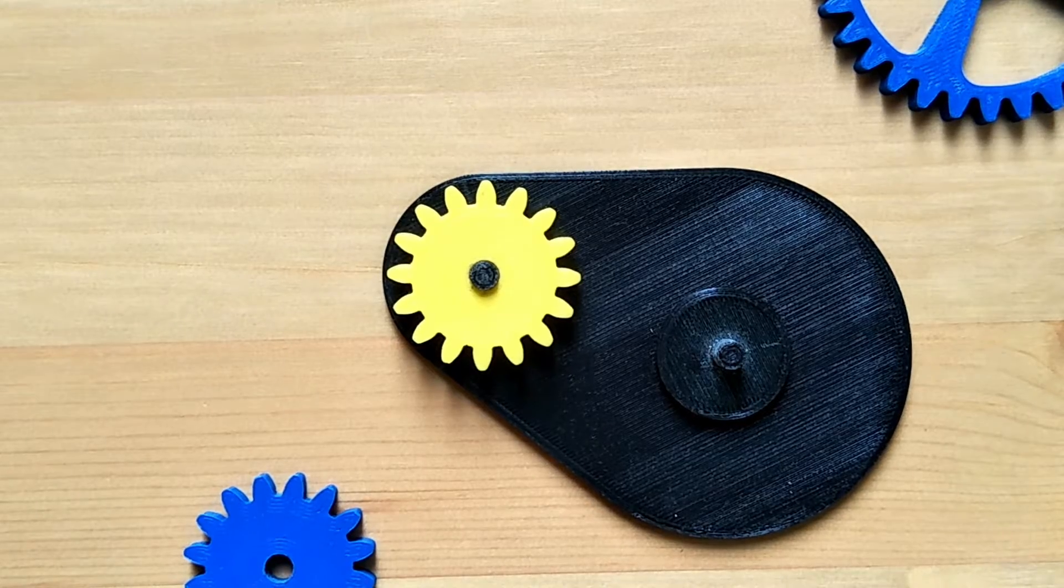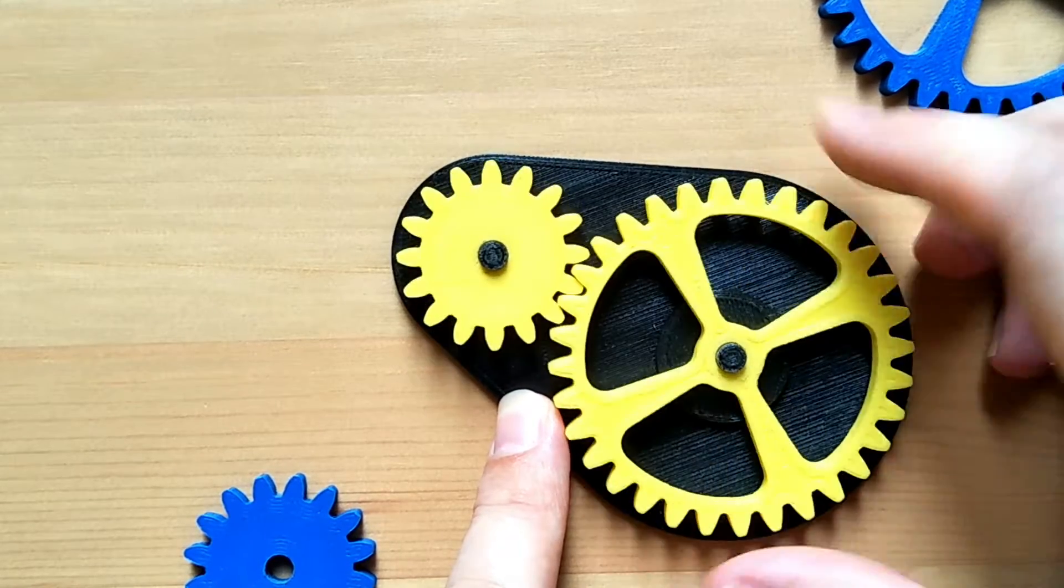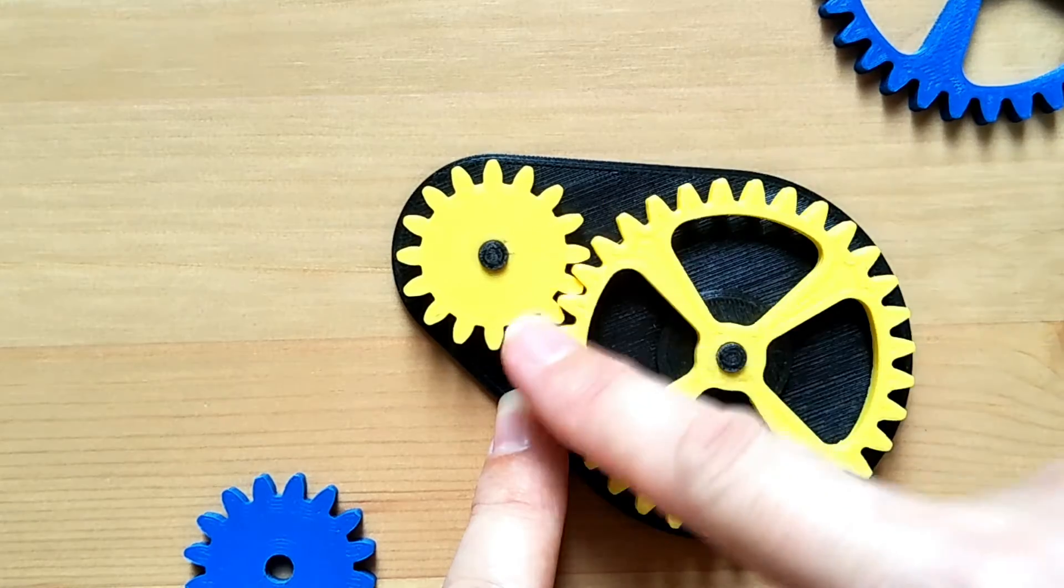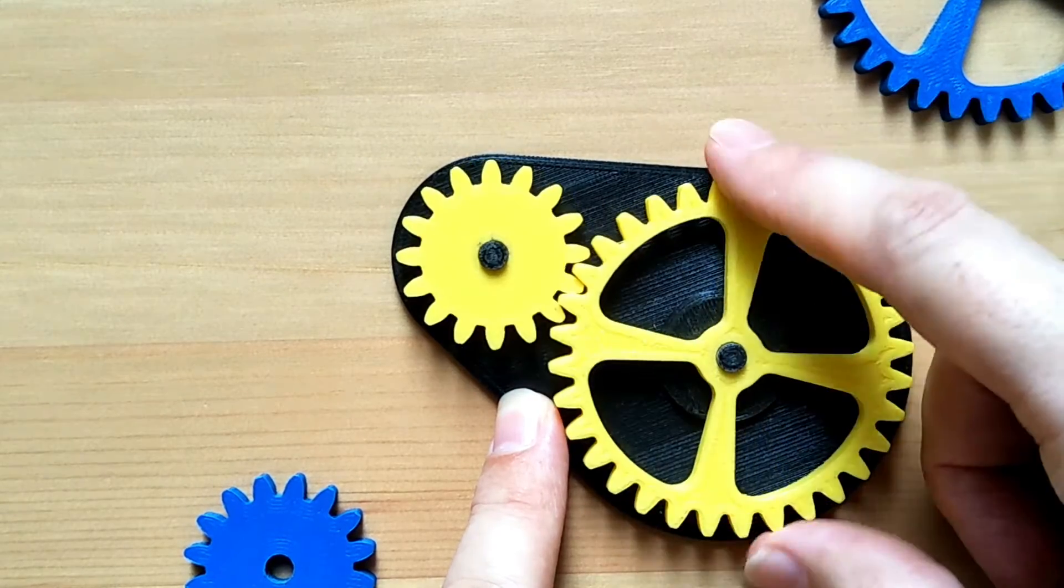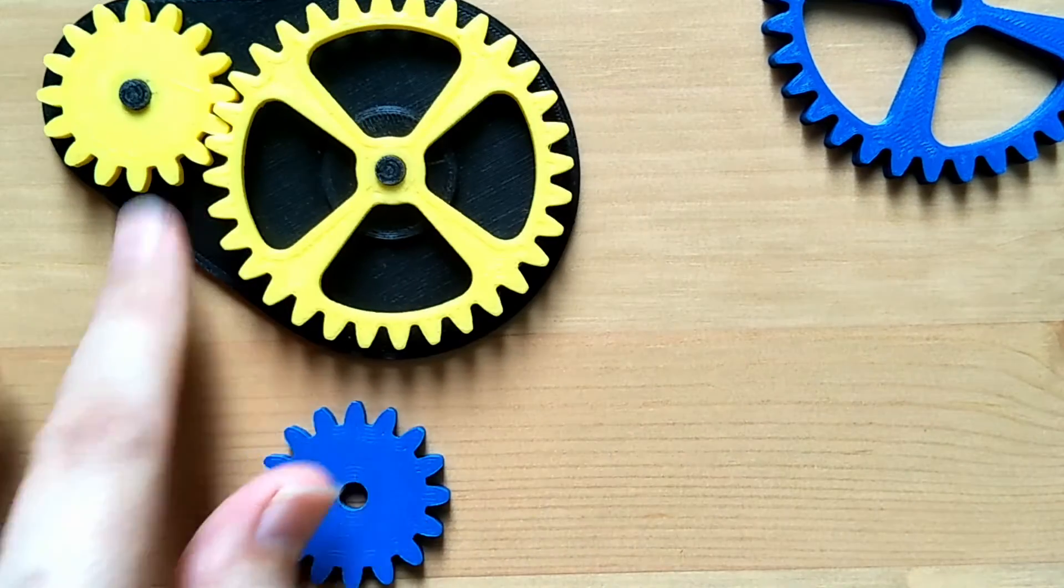My interest lately has been on small little mechanisms with moving parts. The first one that I worked on was a dual spur gear that has a small gear and a large gear that can spin and rotate, and this was a lot of fun to design and print out on my 3D printer.